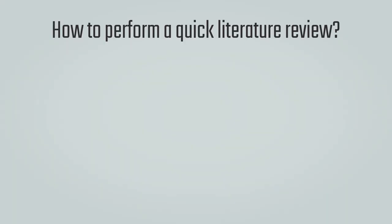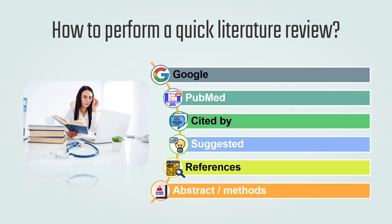What are the sources that you need to look at when you're doing your literature review? My recommendation is to start with Google. I know so many researchers prefer to start with PubMed, but I feel that Google is a better search engine. You will definitely include PubMed in your search, but starting with Google helps you identify the key papers about the topic, which will save you so much time.